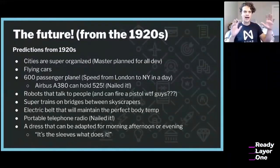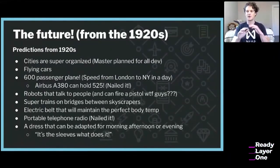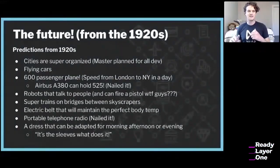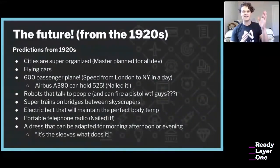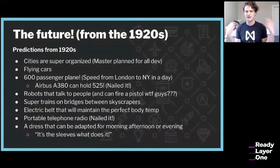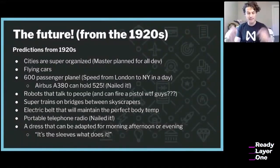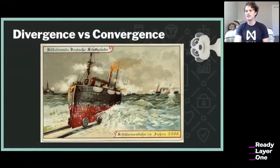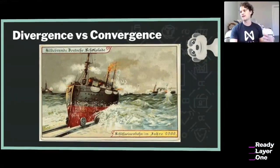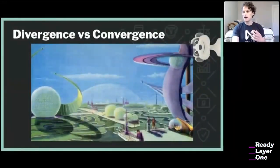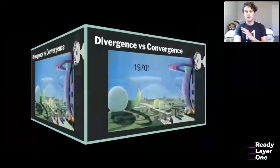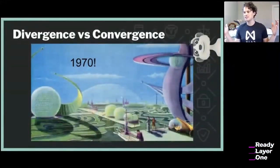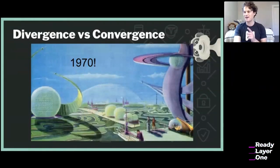One funny prediction from that same video was about a dress that can be adapted for morning, afternoon, or evening — a literal quote about the sleeves. I kept that in to demonstrate how far values can diverge in a hundred years. There's also a German artist's rendering of ships on rails across the Atlantic, and a Russian vision labeled 1970 featuring geodesic domes. We do have weaponized drones now, which is kind of like robots firing a gun — dark but true.